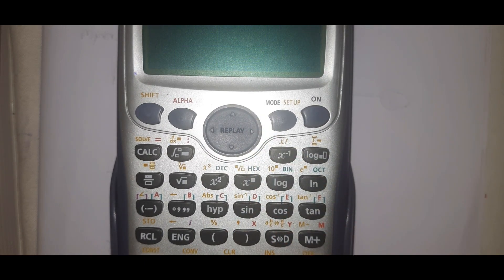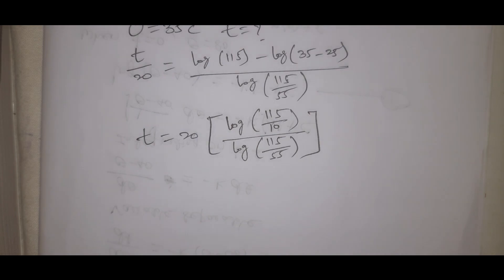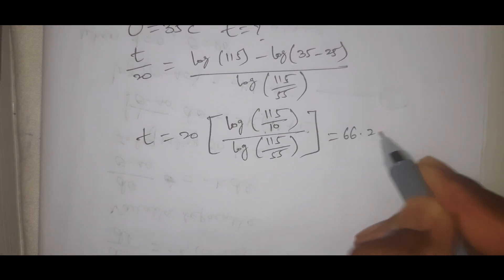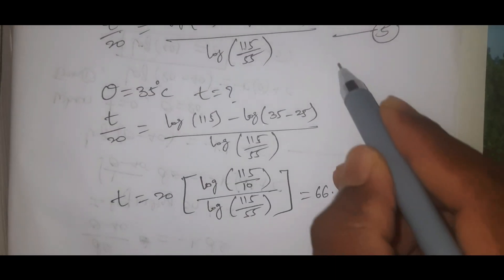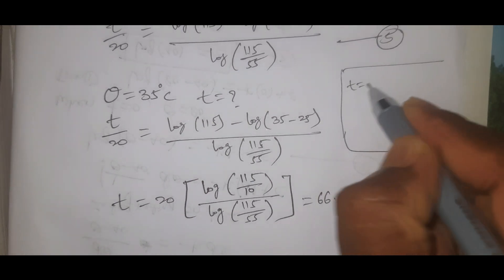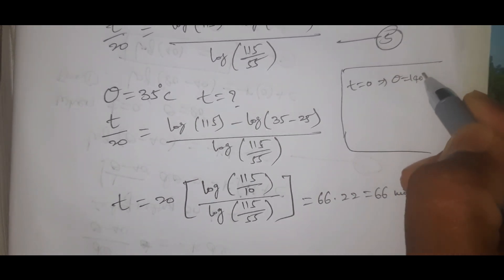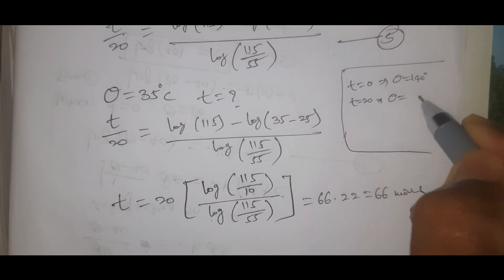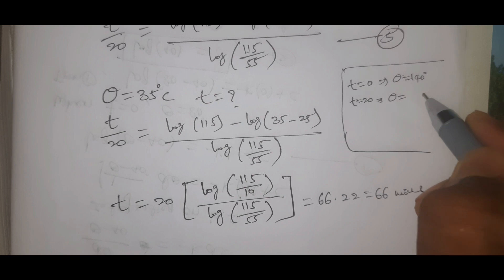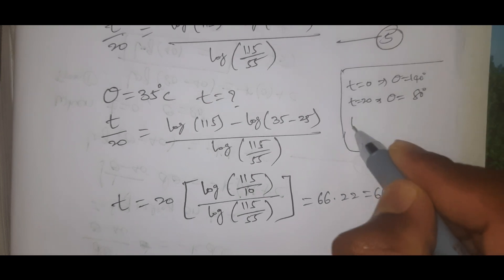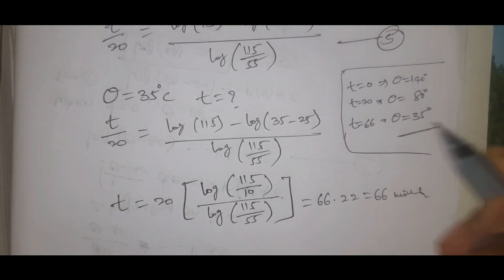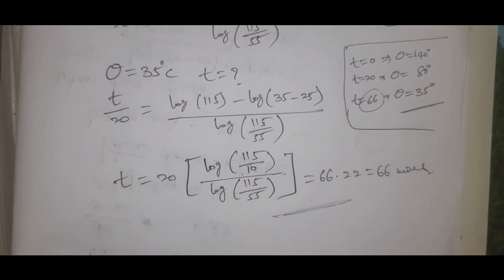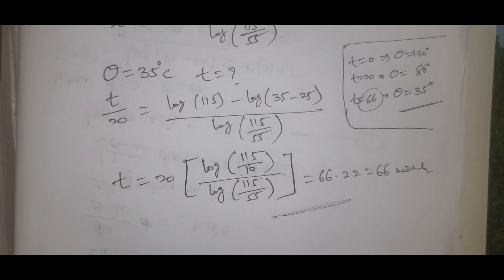Calculating this value, t equals 66.22 minutes. So the body cools down to 35 degrees in approximately 66 minutes. Please subscribe to my channel, don't forget to like and share. Thank you.